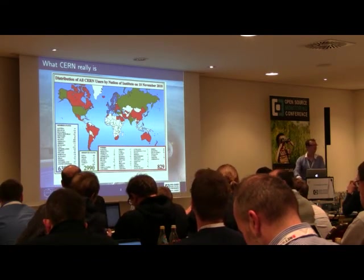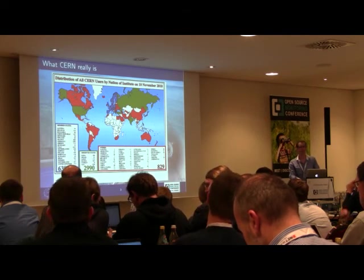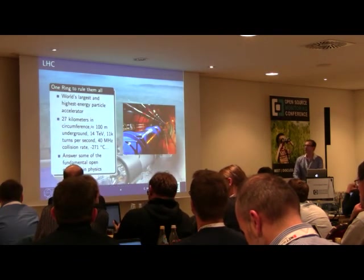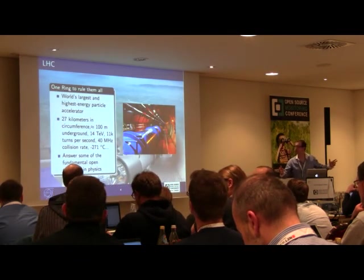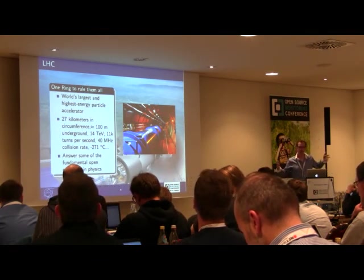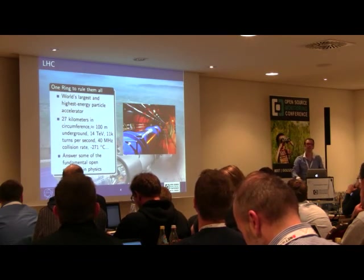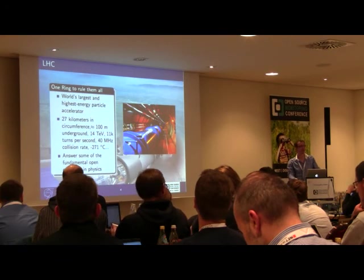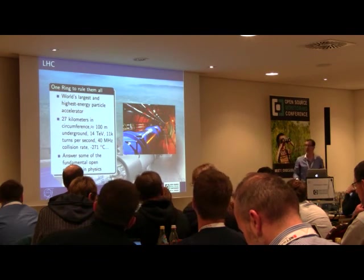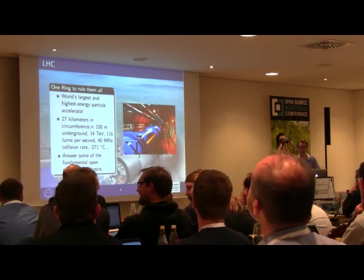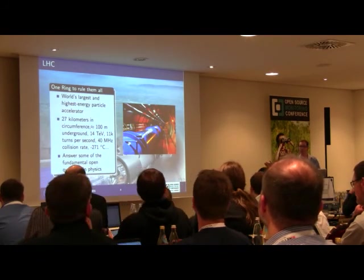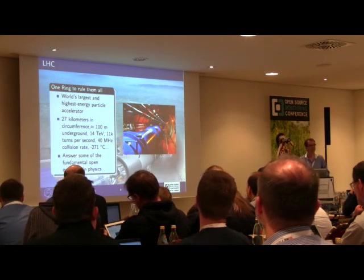CERN has many projects running. The main project is certainly the LHC — the Large Hadron Collider. It's a huge ring, 27 kilometers in circumference, 100 meters below the ground, in which you accelerate trains of particles in both directions. This machine is by far the most complex machine ever built by human beings. It's the coldest place in the universe, the emptiest place in the universe, and it accelerates particles at more than 99.9% of the speed of light.